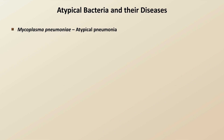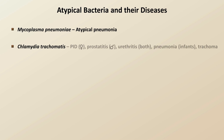Another atypical bacteria genus is Chlamydia, the main species of which is C. trachomatis, which is a sexually transmitted disease. It leads to pelvic inflammatory disease in women, prostatitis in men, urethritis in both genders, pneumonia in neonates, and an eye disease called trachoma. Trachoma is a severe form of conjunctivitis that is one of the leading causes of blindness in the world.